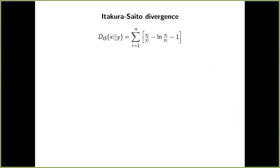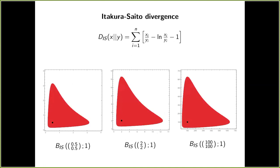And the second divergence I want to talk about is the Itakura-Saito divergence, which is used to process speech and sound data. And here, the Bregman balls are not convex. However, their shape does not alter much as you shift the center around.